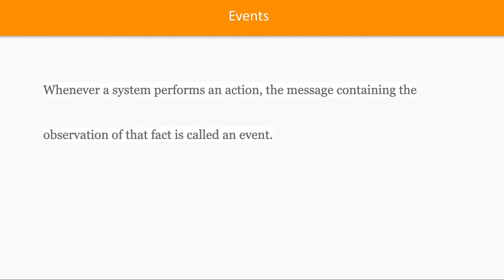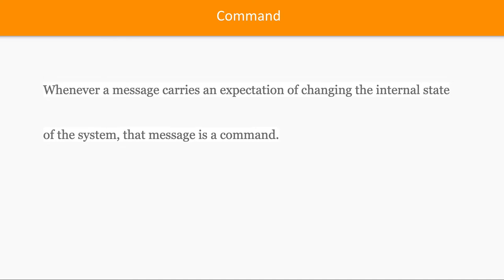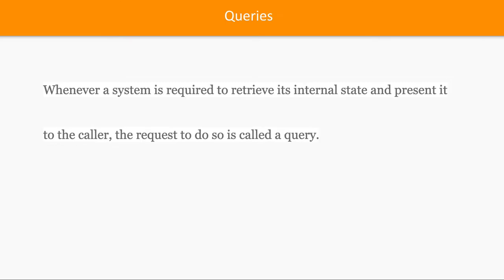What is an event? Whenever a system performs an action, the message containing that observation or fact is called an event. You sent an email — you raised an event. A command is when a message carries an expectation of changing the internal state of the system. A query is when a system is required to retrieve its internal state and present it — you are querying for a particular state. So a message can be an event, a command, or a query. When I expect you to change user state from X to Y, that becomes a command.